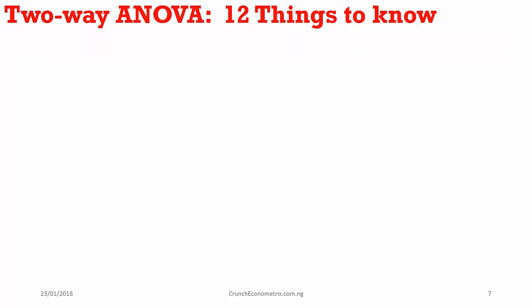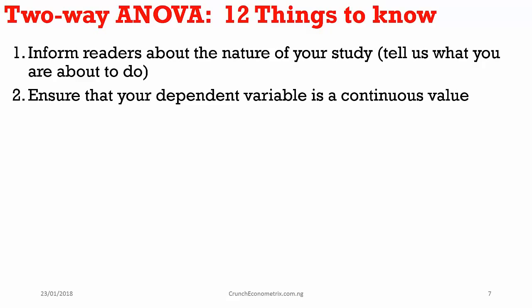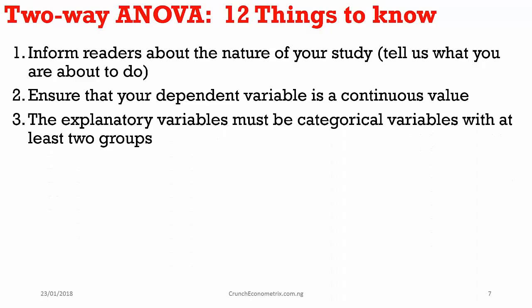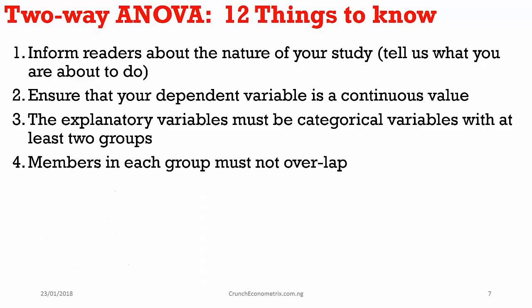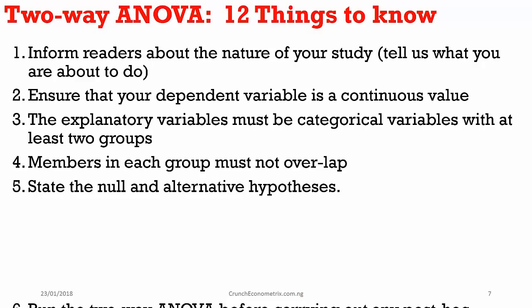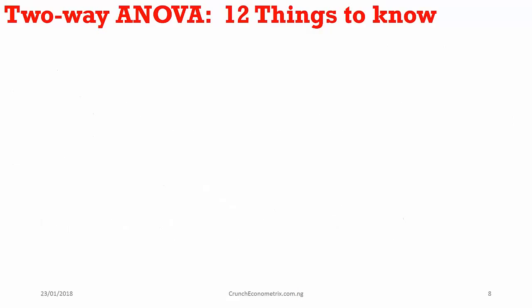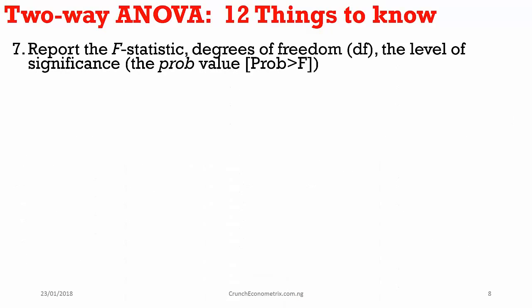I'll wrap up with key things to know when running a two-way ANOVA. First, inform readers about the nature of your study. Your dependent variable must be continuous, and explanatory variables must be categorical with at least two groups. Group members must not overlap, and you must always state your null and alternative hypotheses. Always run the two-way ANOVA procedure before any post hoc analysis — otherwise Stata will give an error message. Report the F-statistics, degrees of freedom, and level of significance.